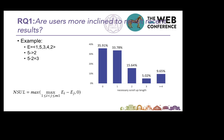For example, if a user examines results in SERP in order 1, 5, 3, 4, 2, the max value of EI minus EJ is 5 minus 2, which equals 3, while the revisit distance may be 2. We compared the statistics of the user's necessary upward scrolling distance, and the results are shown in the figure. It can be seen that in more than 64% of the eye-tracking data, users exhibited revisit behavior, and in the revisit, more than half returned to the nearest result. So the answer to research question 1 is yes.